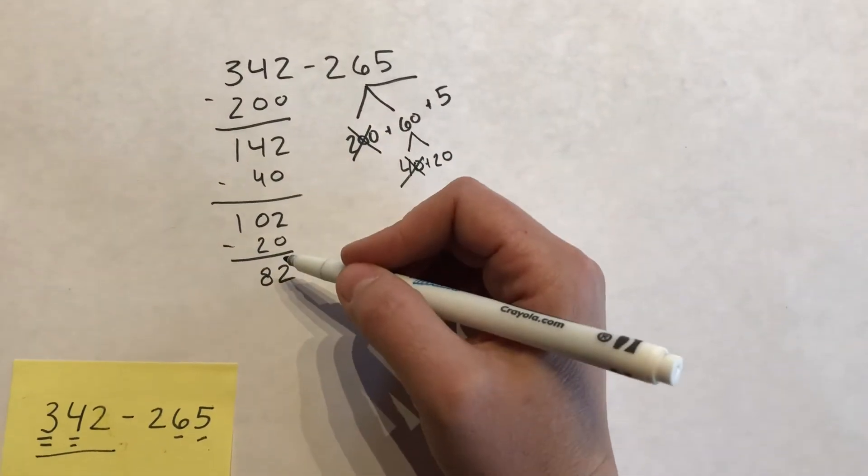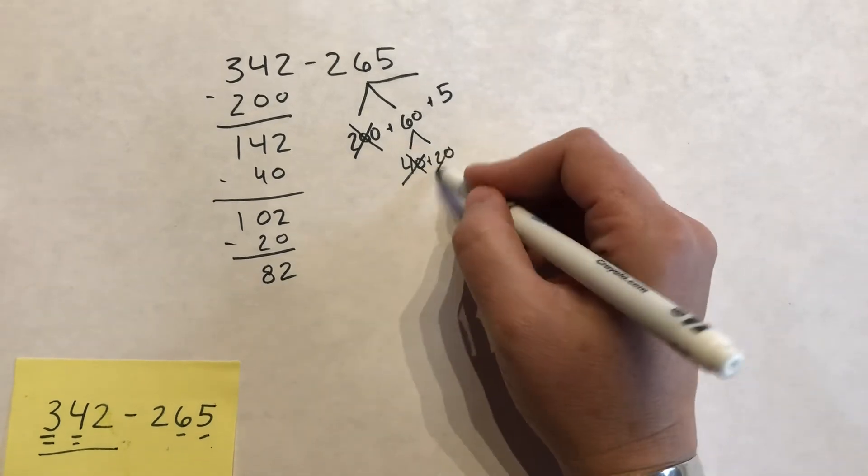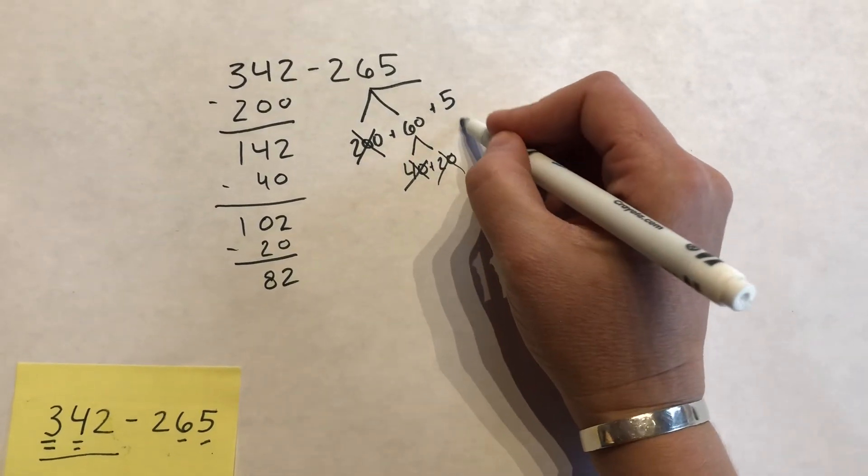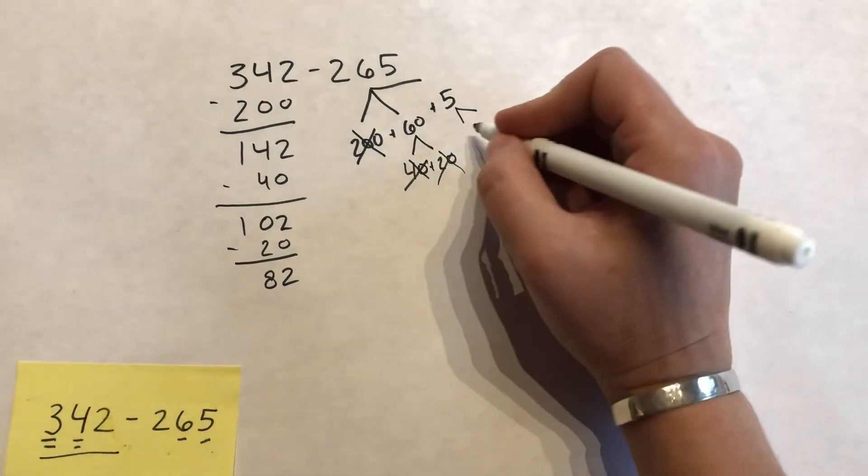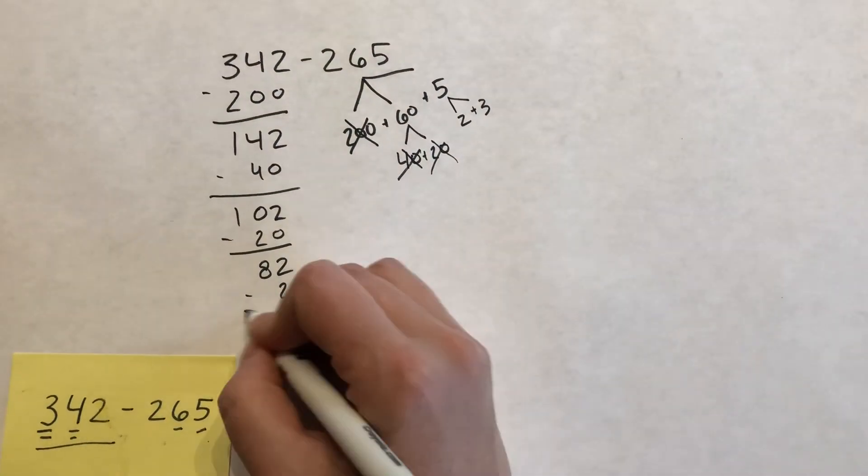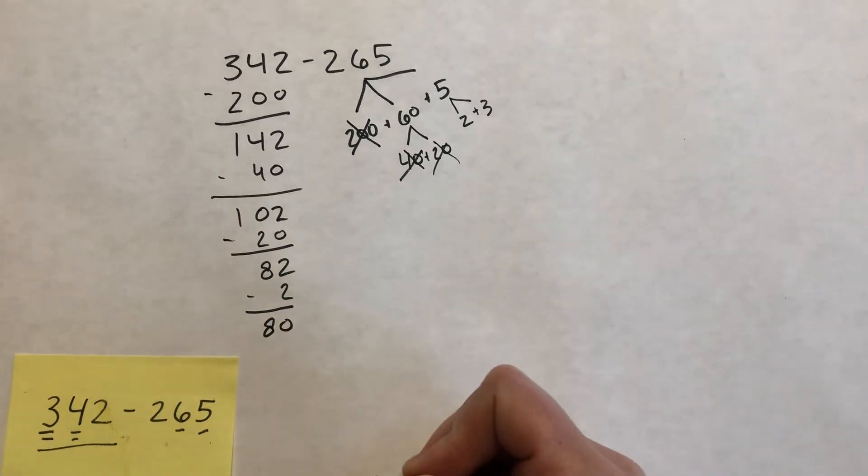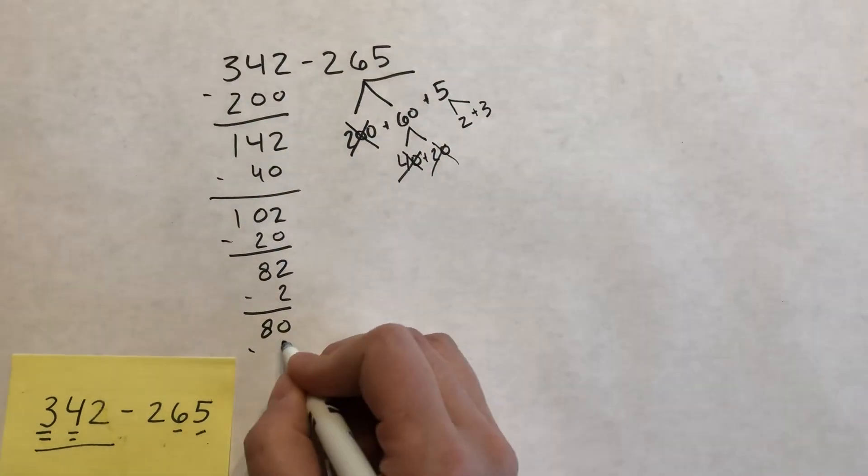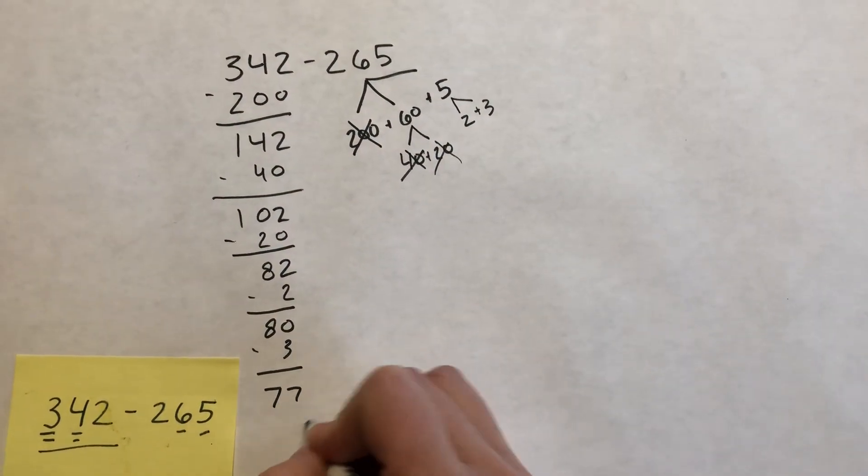So that's what regrouping looks like in this strategy. So what's left is the 5, and again, if I only have 2, I can think about 5 as 2 plus 3. Take away the 2, get to my friendly number of 80, and now I can go back 3 and get to 77.